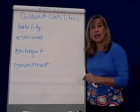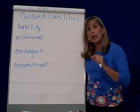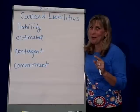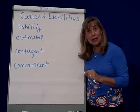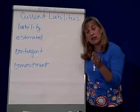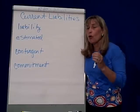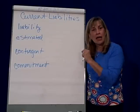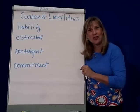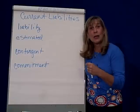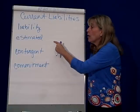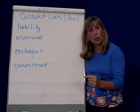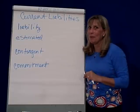The second kind is an estimated liability. We know we owe it, but we don't quite know precisely how much. Examples include income taxes — you know you owe them on December 31st for the year, but you haven't filled out the return yet. So we estimate our liabilities at year end and make adjusting journal entries. Other examples are bad debts, taxes owed, and warranty obligations where sooner or later someone will bring something back.